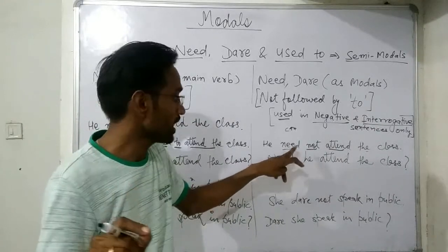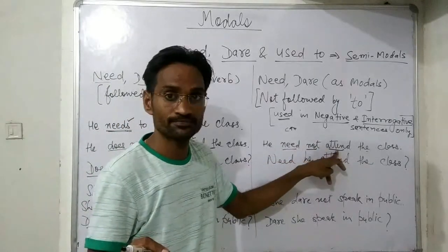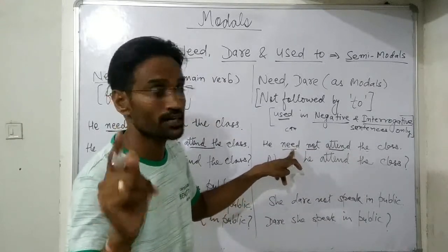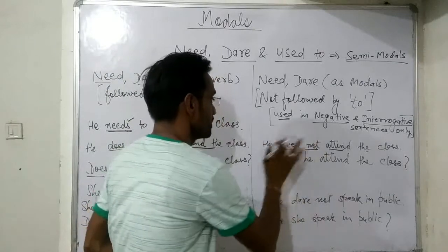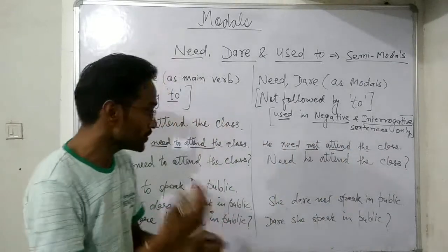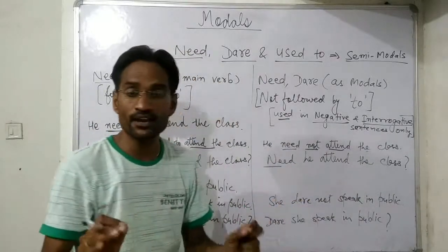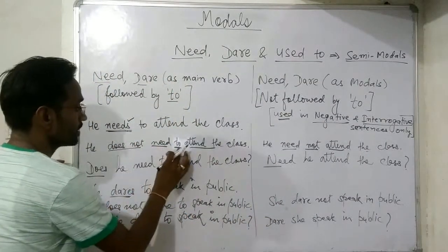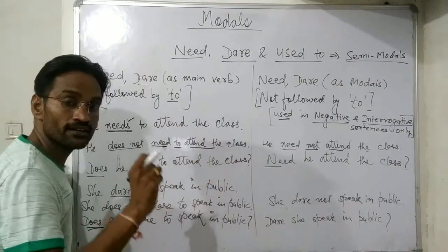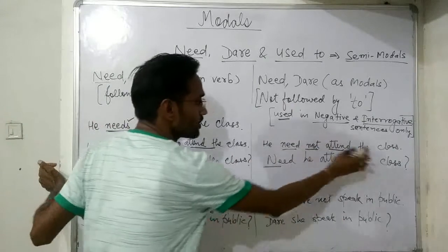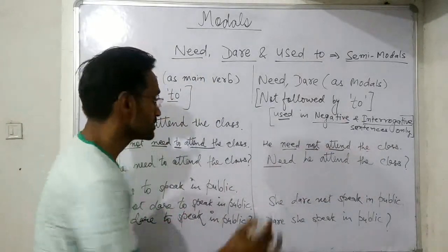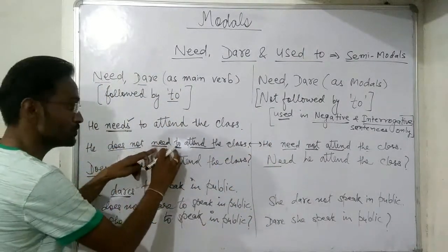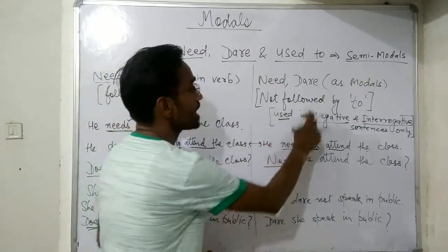Since need functions as a modal here, it is followed by the first form of the verb. And because it is used for negative sense, it is followed by 'not': 'He need not attend the class.' For interrogative: 'Need he attend the class?' Now notice the difference: 'He does not need to attend the class' and 'He need not attend the class' — both sentences have the same meaning, but in the first, need is used as a main verb, and in the second, need is used as a modal.